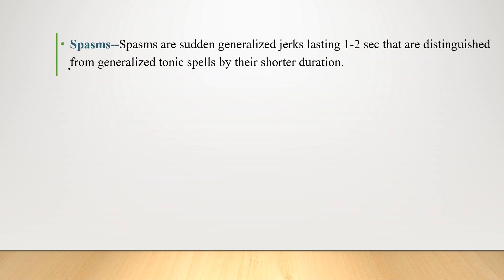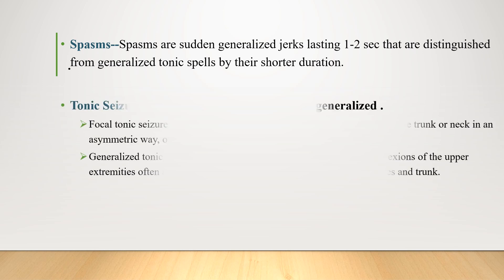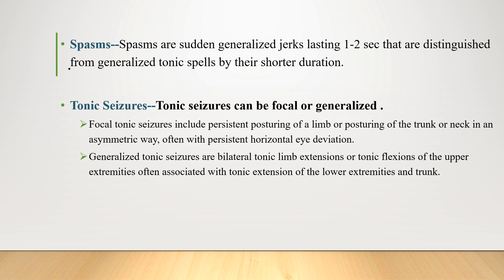Spasms are sudden generalized jerks lasting 1-2 seconds, distinguished from generalized tonic spells by their shorter duration. Tonic seizures can be focal or generalized. Focal tonic seizures include sustained posturing of a limb or posturing of the trunk or neck in an asymmetric way, often with sustained horizontal eye deviation. Generalized tonic seizures are bilateral tonic limb extension or tonic flexion of the upper extremities, often associated with tonic extension of the lower extremities and trunk.